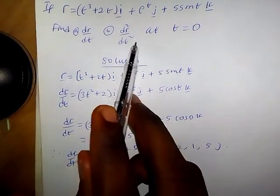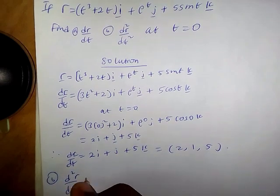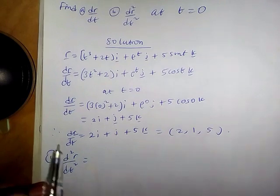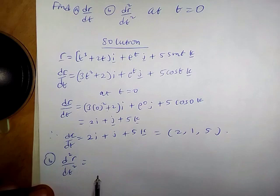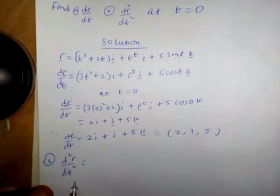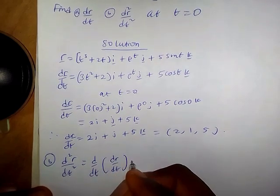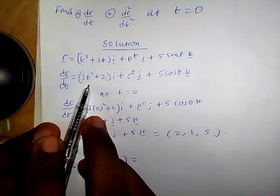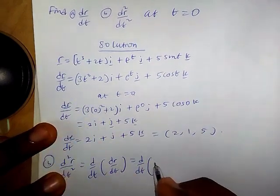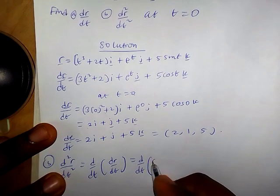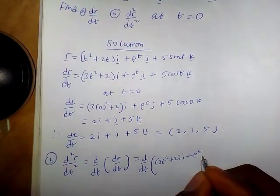The next thing is to evaluate d²r/dt². We differentiate our vector dr/dt with respect to t to obtain d²r/dt², which is our acceleration. So we take the derivative of dr/dt. We have dr/dt as (3t² + 2)i plus e^t j plus 5cos(t)k.